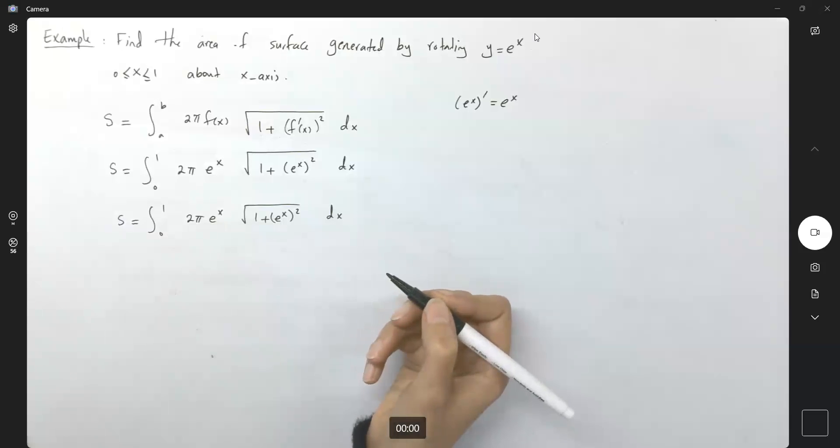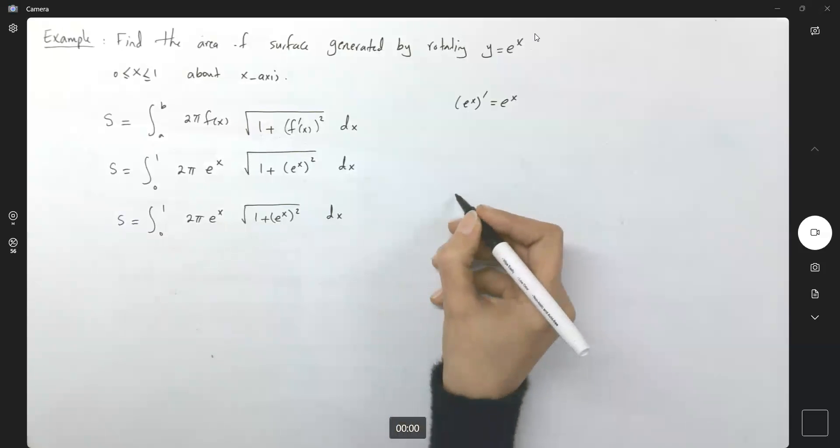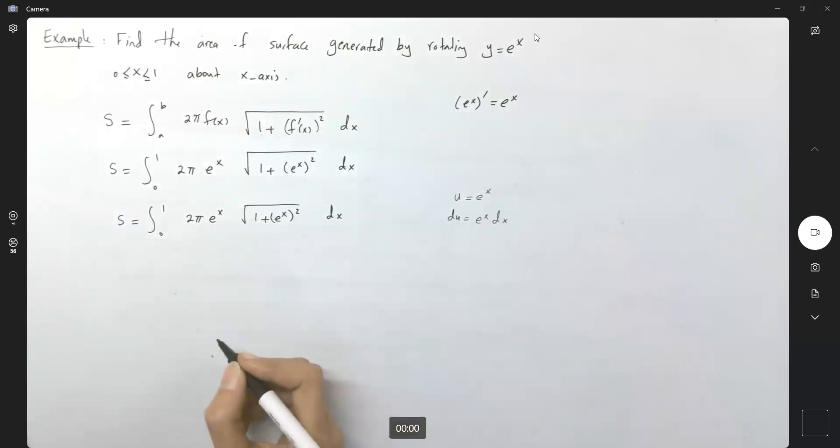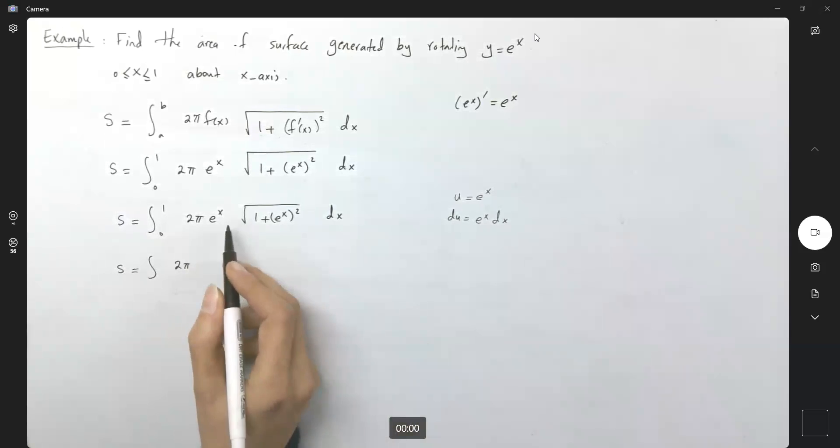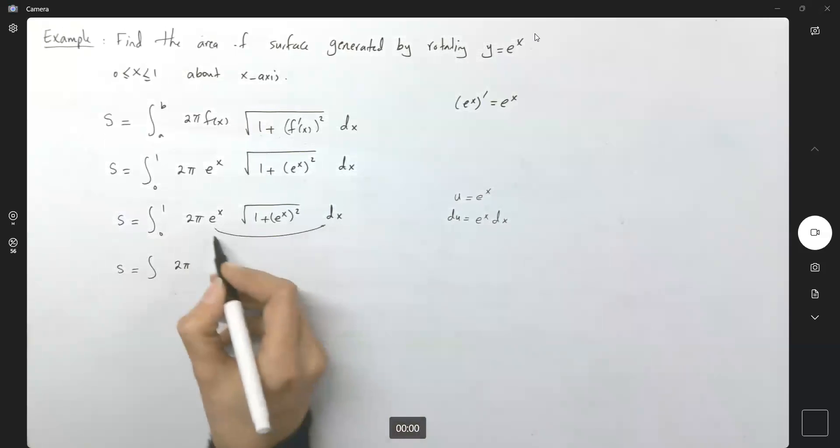Well here you can use u-substitution, for example. Let u be e^x and du is e^x dx. So let's see what happens here. S is the integral of 2π √(1 + u^2) du.